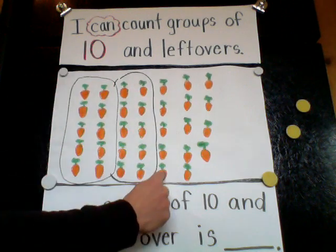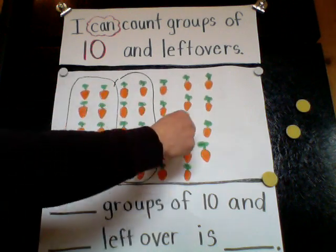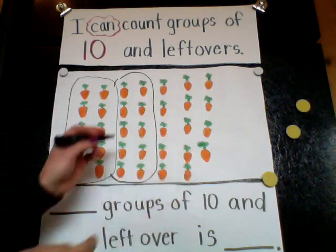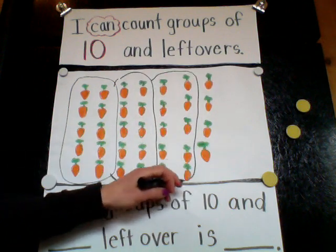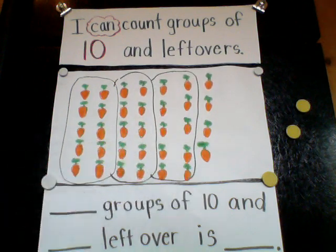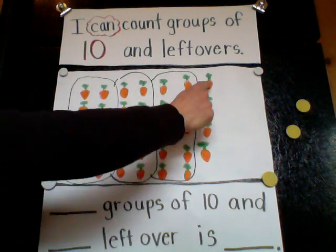One, two, three, four, five, six, seven, eight, nine, ten. Another group of ten carrots. Now let's check out what we have left over.